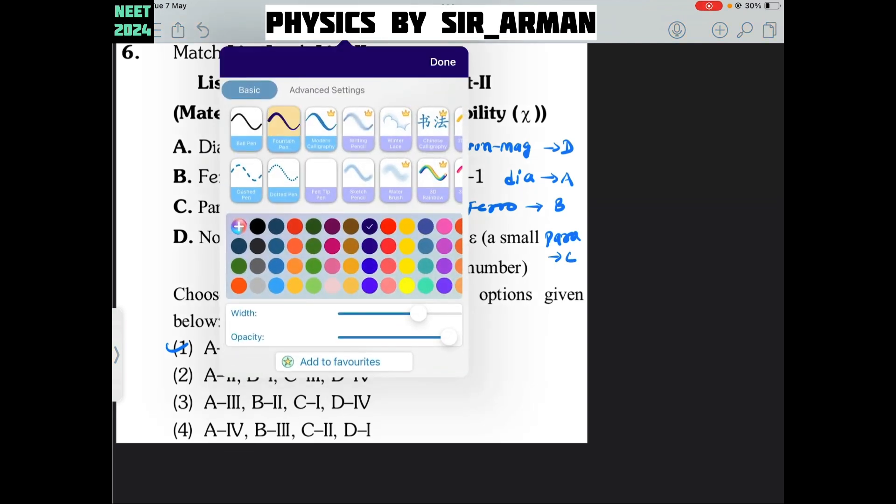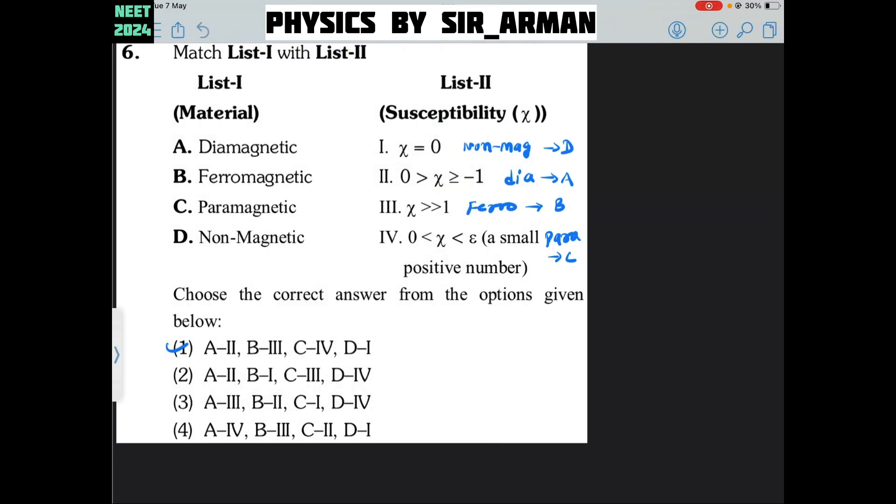If you try to check this first, let us say we are very familiar with non-magnetic. Non-magnetic means that does not have any susceptibility. So D correspond to 1.